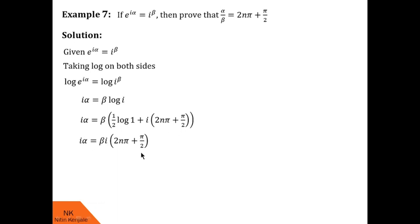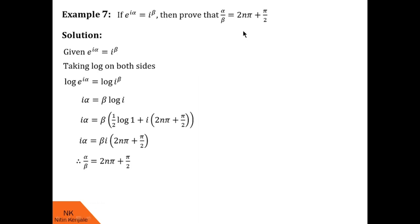The i on both sides cancels, so we get alpha equals beta into (2n pi + pi/2). Taking beta to the other side, we get alpha/beta equals 2n pi + pi/2, as required. Hence the given statement is proved.